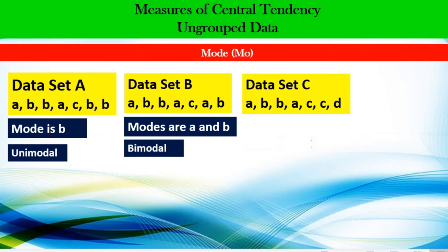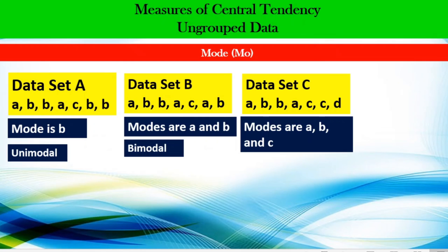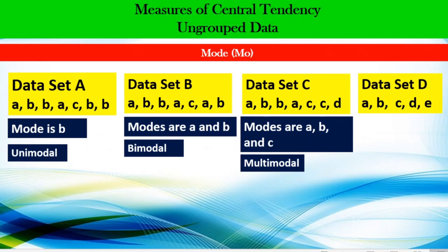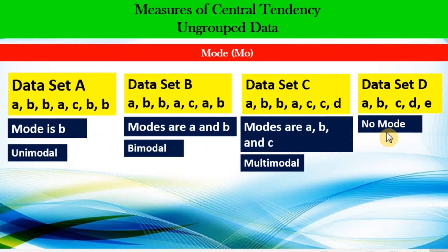Dataset C: we have two A's, frequency for A is two; frequency for B is two; frequency for C is two; and frequency for D is one. So we can see three different modes — A, B, and C. We call this dataset multimodal. For dataset D with five data points — A, B, C, D, and E — all data points have a frequency of one. We do not say the modes are A, B, C, D, and E. Instead, we say the dataset has no mode, because we cannot identify a data point that is more frequent than the others.